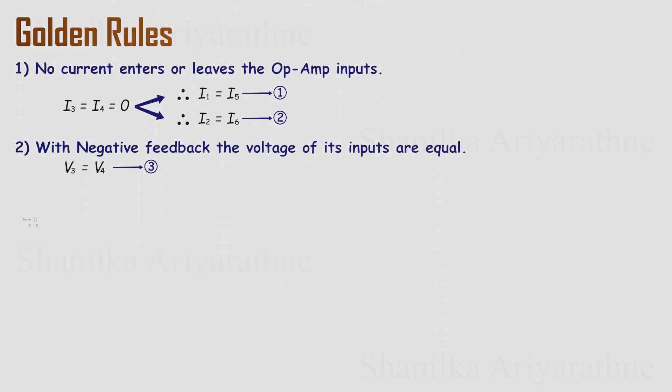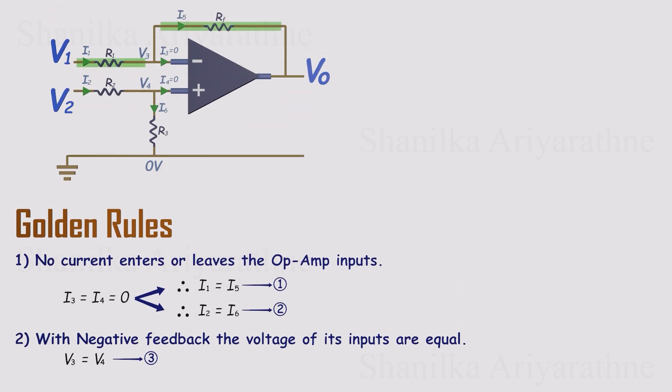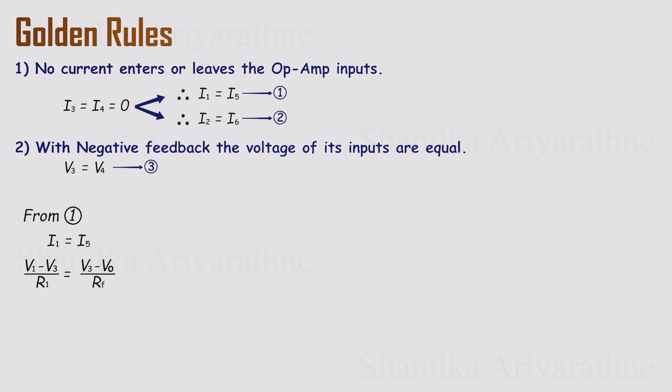Let's start with equation 1. I1 equals I5. Looking at the circuit, I1 flows through resistor R1 and I5 flows through the feedback resistor, RF. By Ohm's law, each current can be written as the voltage difference across its resistor divided by the resistance. Substituting those expressions into the equation gives us a relationship for V3, the voltage at the inverting input.